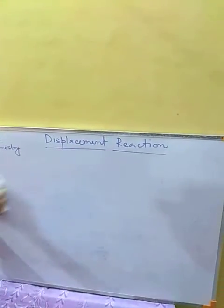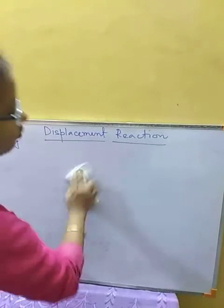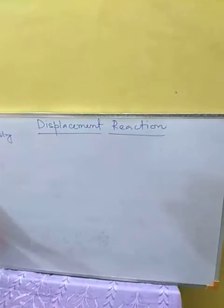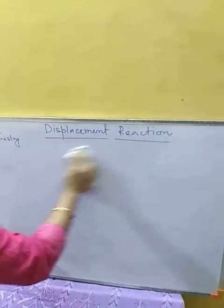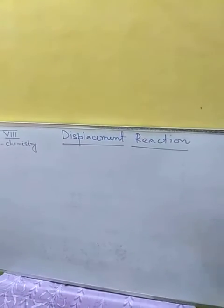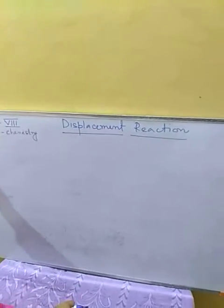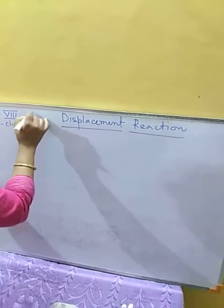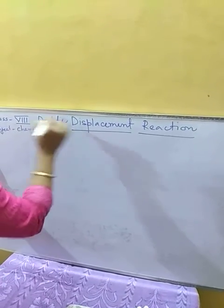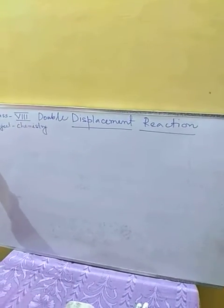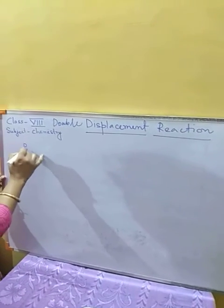Now we are going to discuss double displacement reactions. There are two kinds: number one is precipitation reaction, where we get a precipitate, and number two is neutralization reaction. We will discuss the precipitation type first.